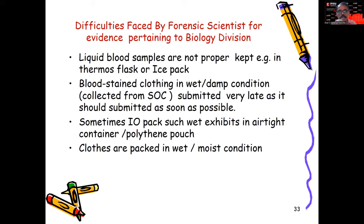In the biology division, liquid blood samples are most often not properly kept — they should be kept in ice packs or thermophoresis containers. Samples get contaminated. Blood-stained clothing in wet and damp condition collected from the crime scene is submitted very late. Blood-stained clothing should not be given in wet condition — it should be air-dried. Sometimes the IO packs such wet exhibits in airtight containers and polythene pouches, which is highly contaminating because when opened, organisms have developed on the cloth.